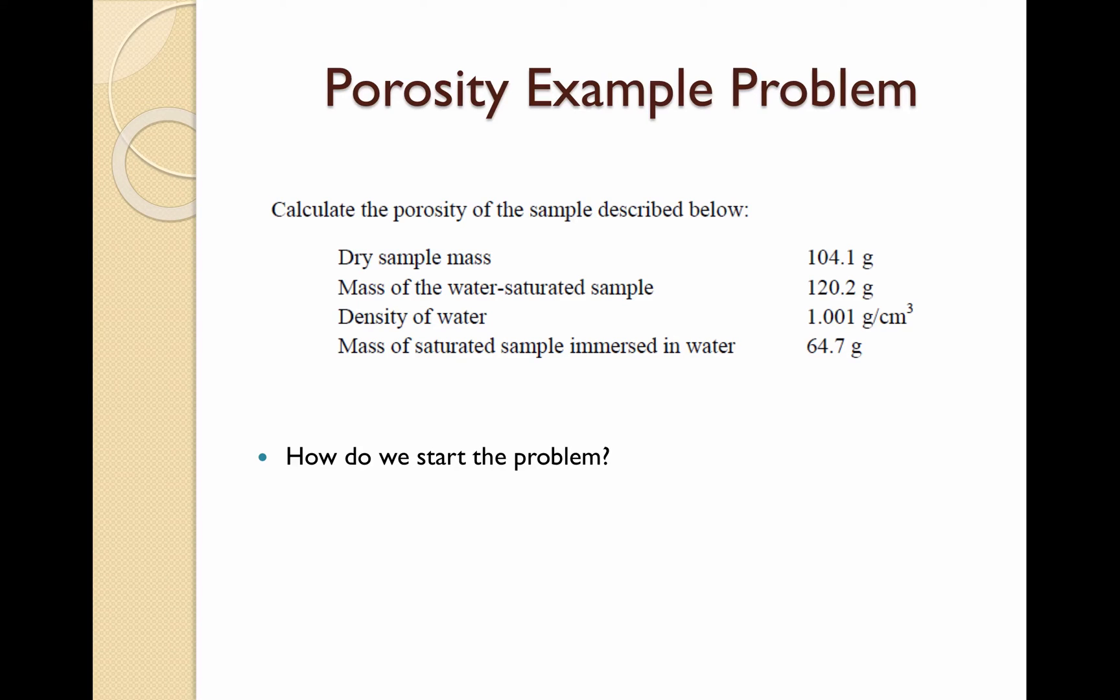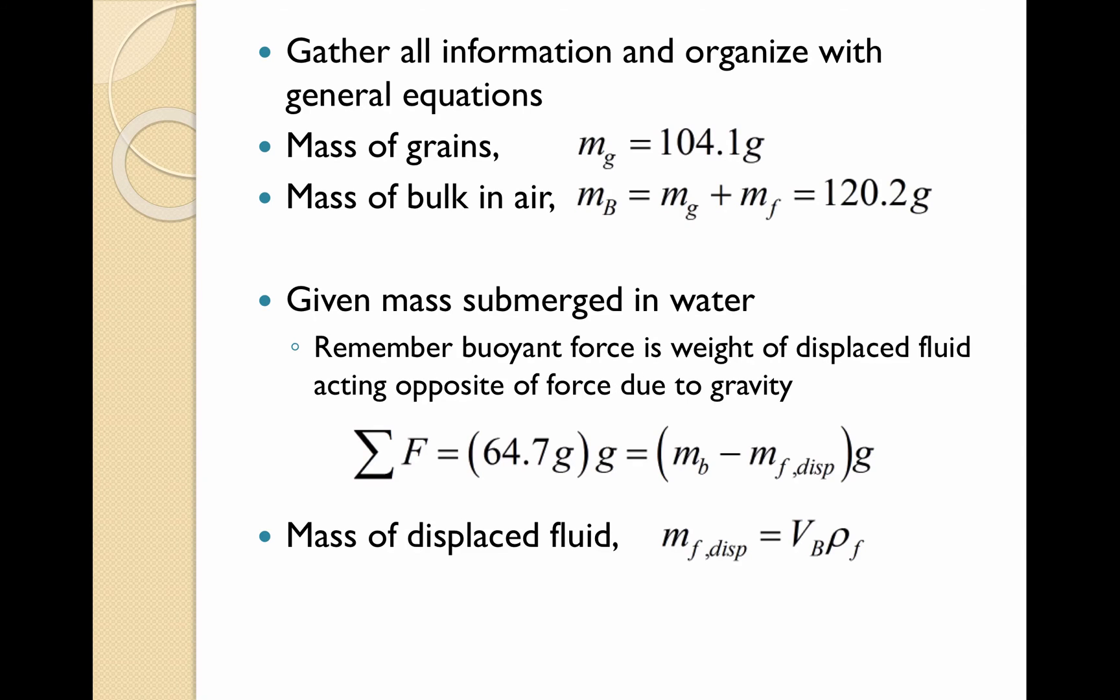We are now going to work through a porosity example problem. Calculate the porosity of the sample described below. So how exactly would we start a problem like this? First, you need to gather all the given information and organize with the general equations. We have the mass of the grains equal to 104.1 grams. The mass of the bulk in air is equal to the mass of the grains plus mass of the interlocked fluid, which is equal to 120.2 grams. The mass of the bulk when submerged in water is equal to 64.7 grams. This is because of the buoyant force of the fluid pushing up on the bulk. We know that the buoyant force is equal to the weight of the displaced fluid.